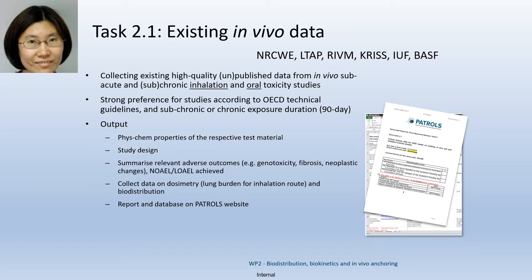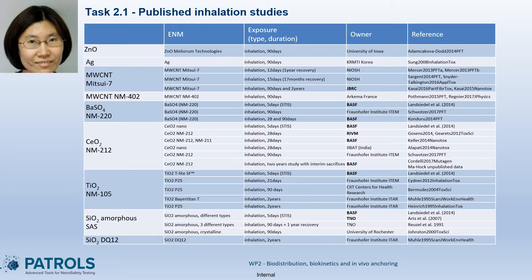The report and database can be found on the public deliverable site of the PATROLS website. This slide shows the materials we collected. We include some five-day studies, but in our database we give strong preference toward 90-day and two-year studies. The first column lists different materials, the second specifies the type, and we provide information on study type, duration, data owner, and references. All details can be found on the PATROLS website.